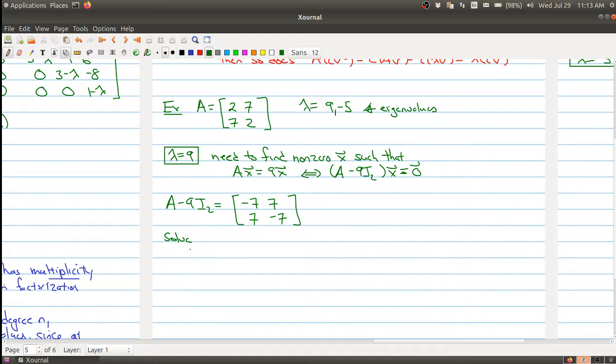Then I want to solve, let's set up the augmented matrix here. So I want to solve negative 7, 7, 0, 7, negative 7, 0. I'll put dotted lines there just to remind us that it's an augmented matrix. Obviously I can add one row to the other row and kill it, so I get 7, 0, 0, 0, 0. I can even go a little further. I can divide out by negative 7 and I end up with negative 1, negative 1, 0, 0, 0, 0. And of course this was a simple example, but we get x2 is free.